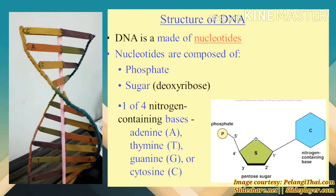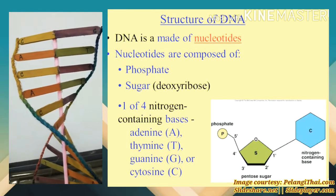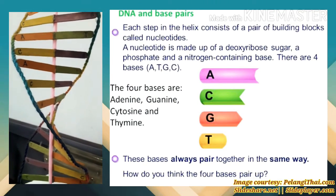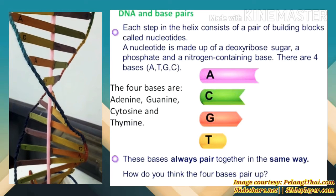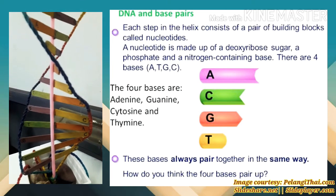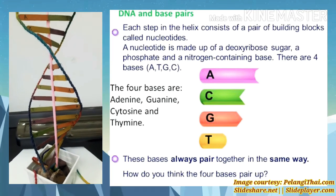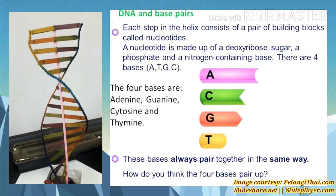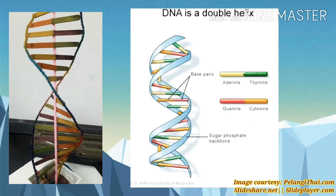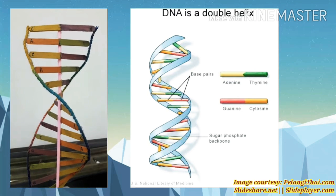When two strands of DNA come together, base pairs form between the nucleotides of each strand. Nitrogenous bases pair together in the following way: adenine pairs with thymine, and cytosine pairs with guanine. These bases interact through weak bonds, which is what we call hydrogen bonding.